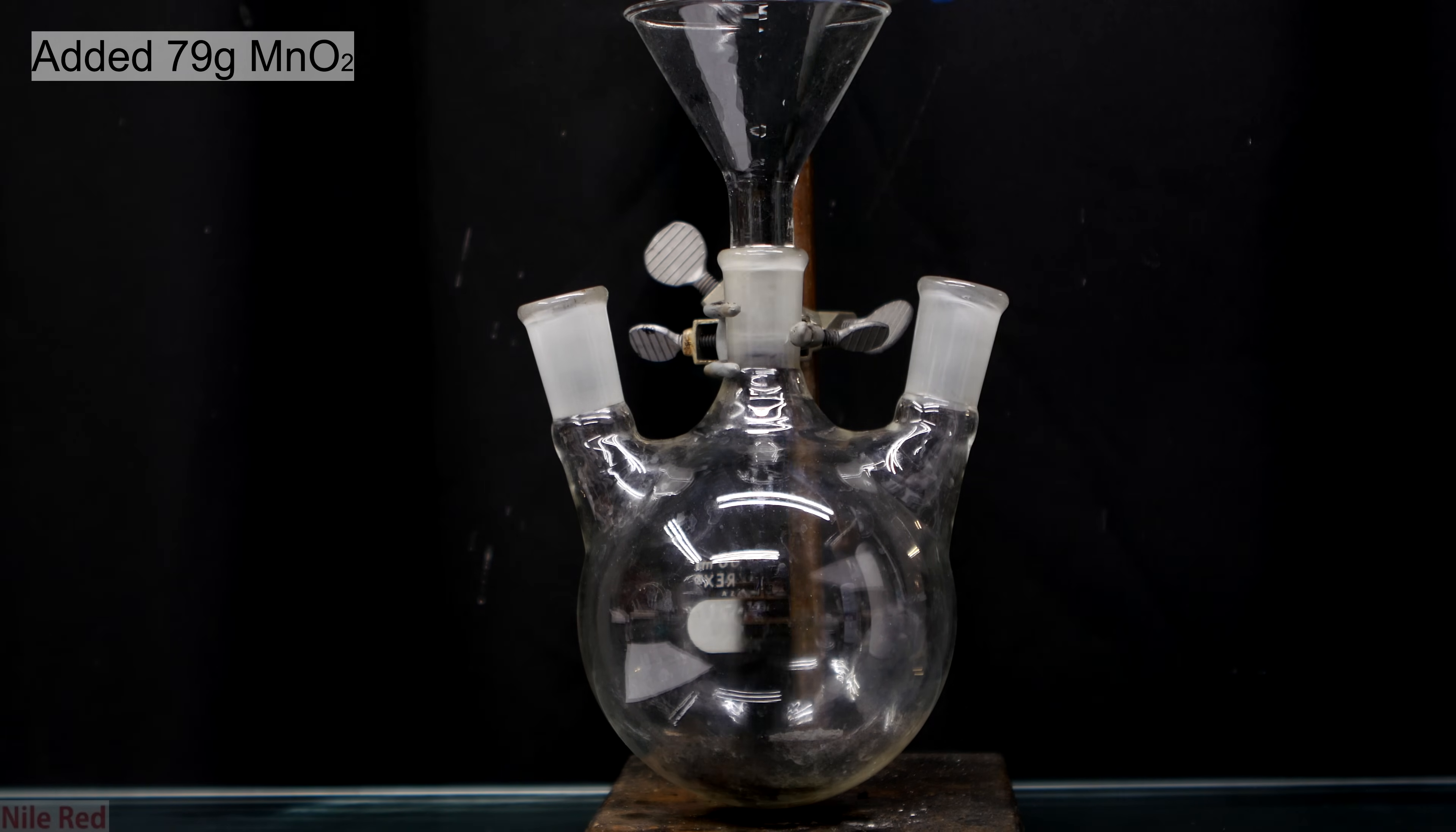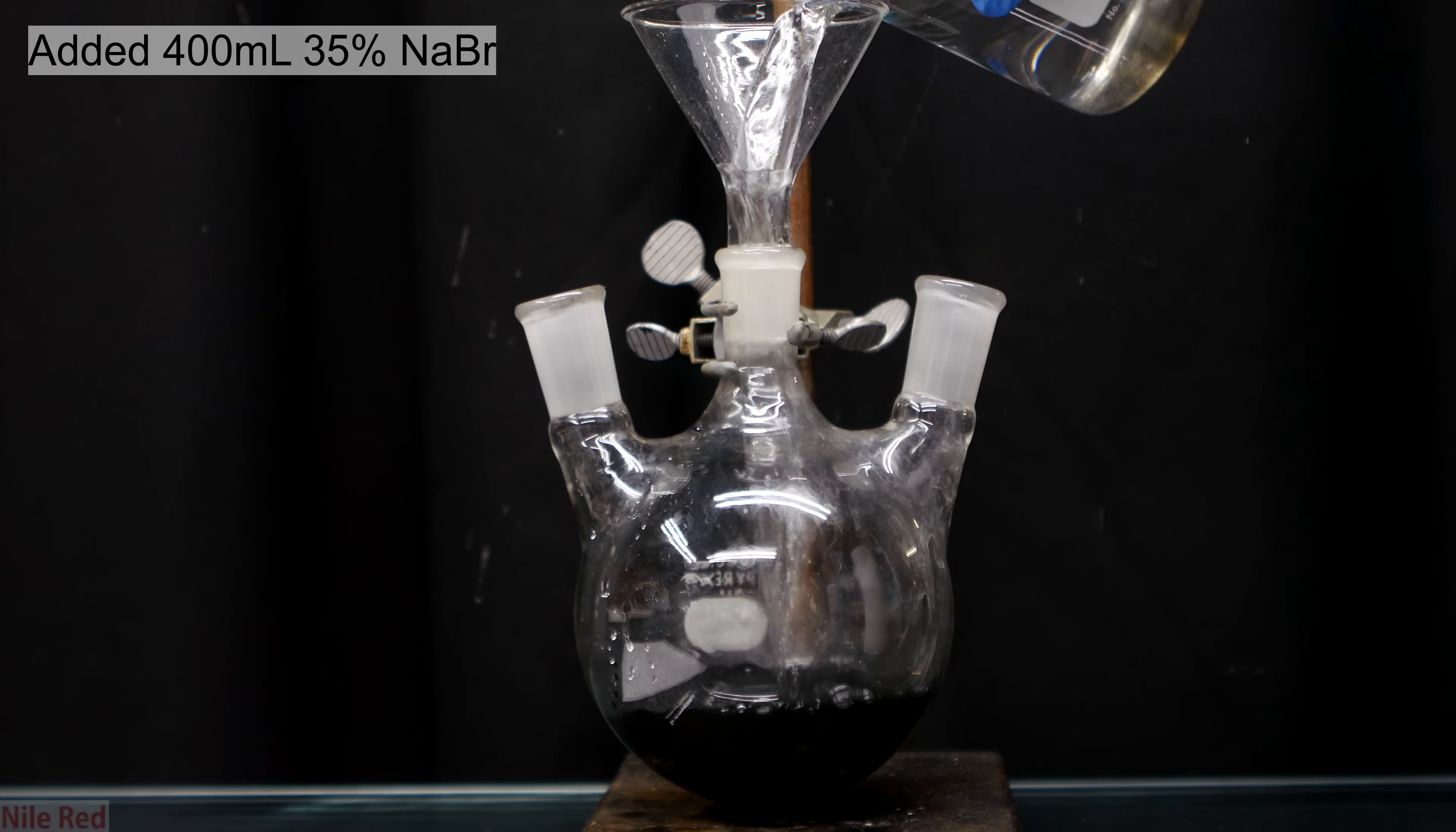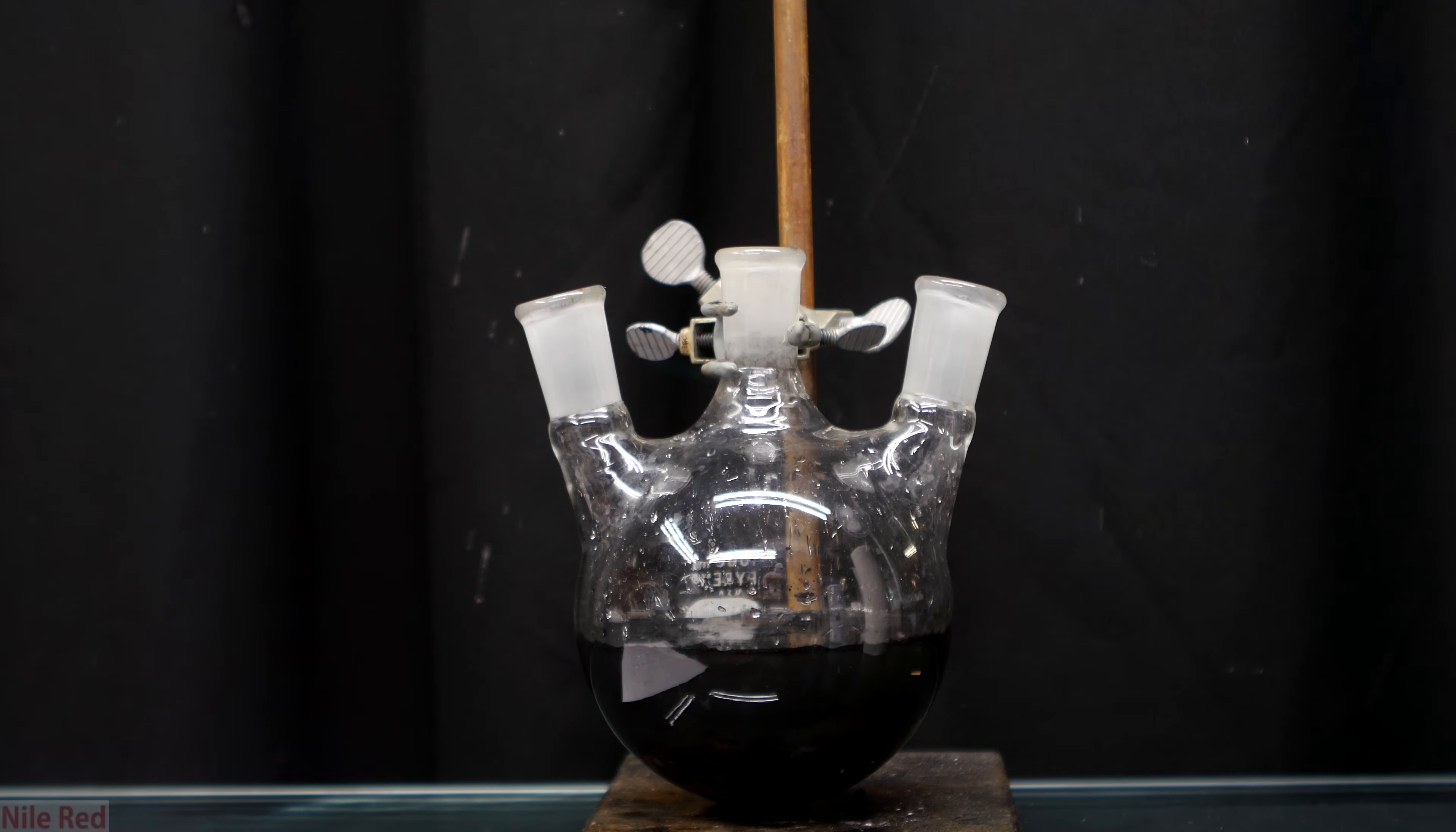To a 1 liter 3-necked round bottom flask, I added the 79 grams of manganese dioxide. Directly on top of the manganese dioxide, I pour in the 400 milliliters of the 35% sodium bromide solution. I then remove the funnel and I drop in a large stir bar.